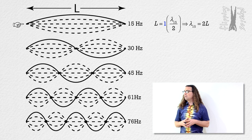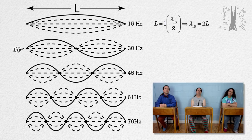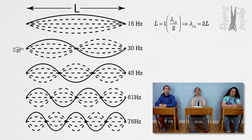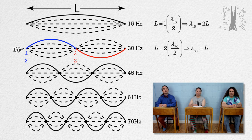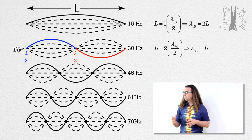Okay. Bo, how many wavelengths in the string for the 30 hertz standing wave pattern? It looks like there are two half wavelengths. That means the wavelength of the wave equals L, the length of the string. Correct, Bo.